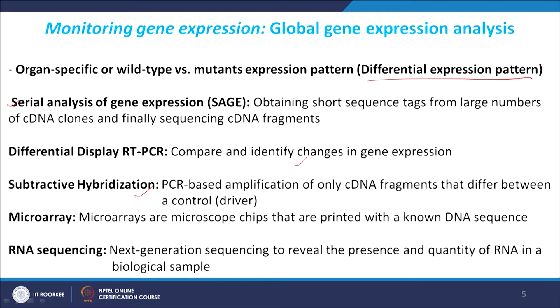Another way was subtractive hybridization — this was PCR-based amplification of only cDNA fragments that differ between two conditions. Basically, you take two populations of messenger RNA, make cDNA, then do the subtraction. After subtraction you isolate only those populations which are differentially expressed and then you can specifically amplify and identify them.